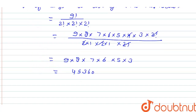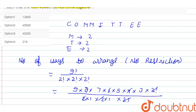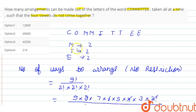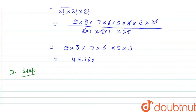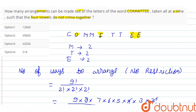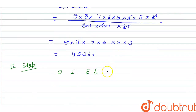In the second step, find the number of arrangements in which the vowels are together. First, count the vowels in COMMITTEE: O is a vowel, I is a vowel, and double E is also a vowel. Now write out the vowels and the consonants separately. The consonants are C, double M, and double T.